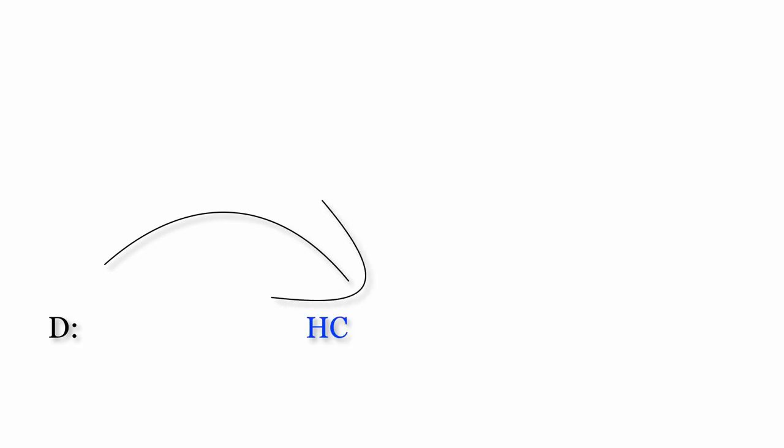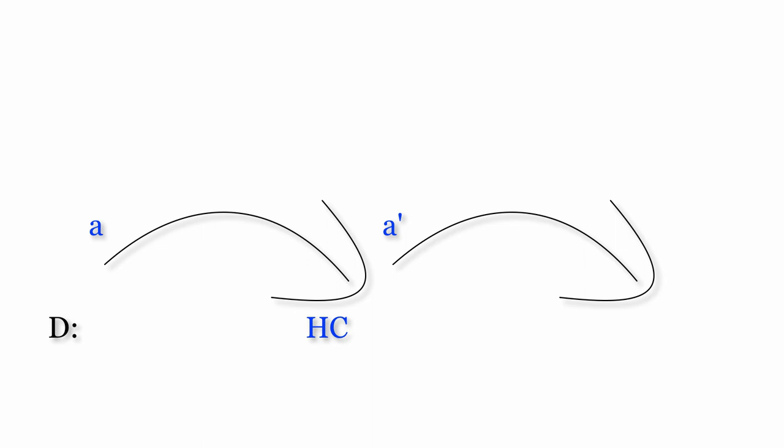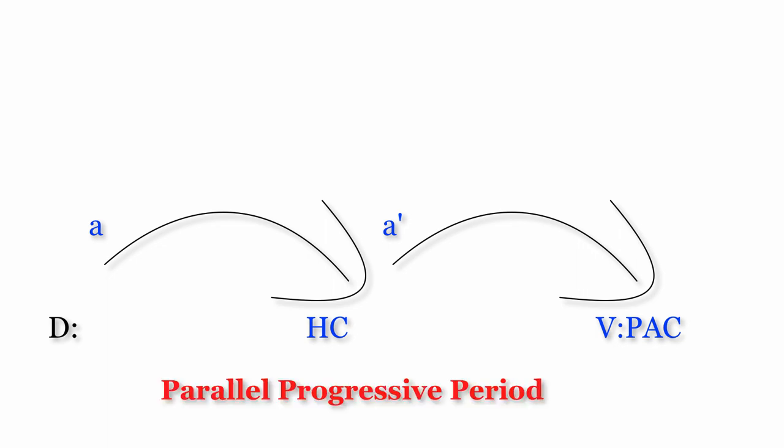In this final example, the first phrase ends with a half cadence in the home key of D major. The second phrase begins with the same three-note melodic motive, but quickly modulates to the key of A major, and concludes with a perfect authentic cadence. Since the second phrase begins with the same melodic material but concludes with an authentic cadence in a new key, this is a parallel progressive period.